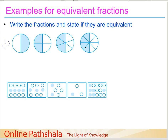Now let us try to write down the fractions and mathematically prove that they are equivalent. The first fraction can be represented as 1 by 2 — that is, one part out of two parts. In the second figure we have two parts shaded out of four total, so we write this as 2 by 4. In the third figure we have 3 by 6, because 3 parts out of 6 have been shaded. And in the fourth figure, 4 parts have been shaded out of 8 total, so we have 4 by 8.